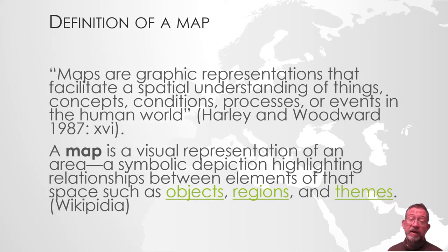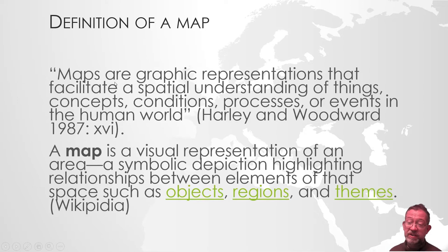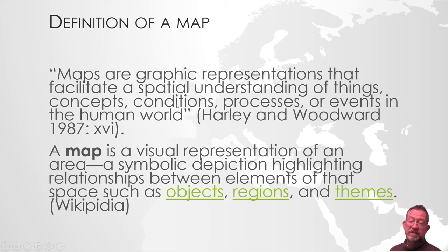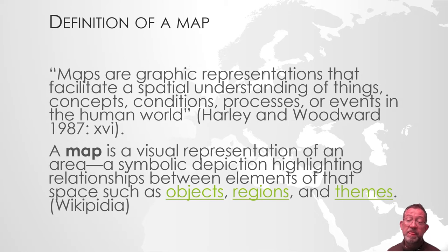I have two of my favorite definitions of a map. Harley and Woodward have given this definition: maps are graphical representations that facilitate a spatial understanding of things, concepts, conditions, processes or events in the human world. What's interesting in this definition is that it doesn't say anything about having to be true to scale or having to be in any specific way. It talks about facilitating a spatial understanding — any graphical representation that facilitates a spatial understanding of things, concepts, and so on, is a map.